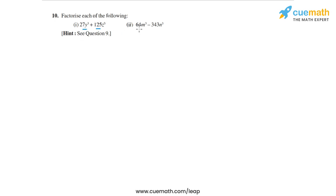The second one is 64m³ - 343n³. Again, both of the terms in this expression are perfect cubes.